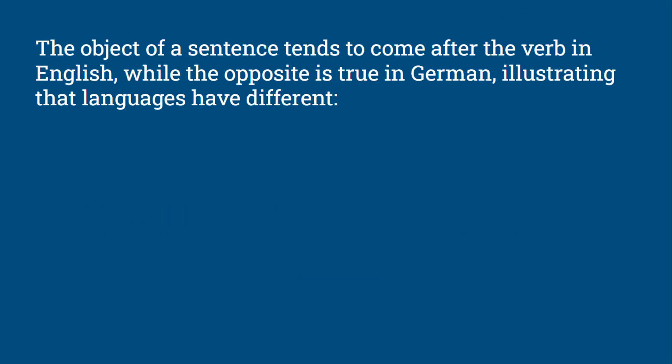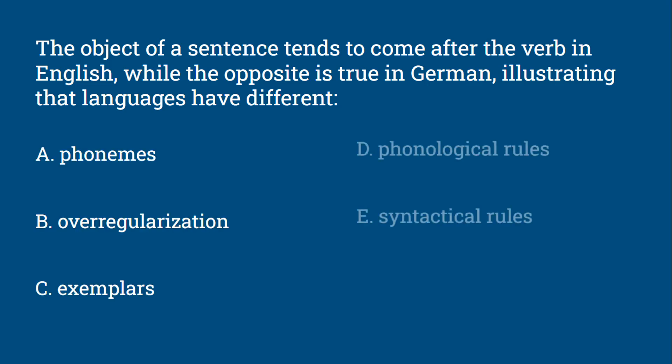The object of a sentence tends to come after the verb in English, while the opposite is true in German, illustrating that languages have different: phonemes, over-regularization, exemplars, phonological rules, or syntactical rules.